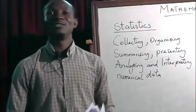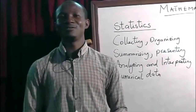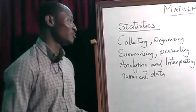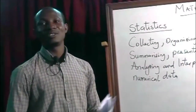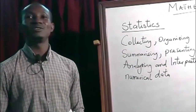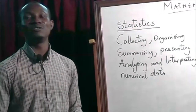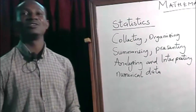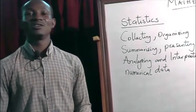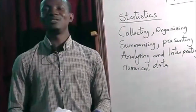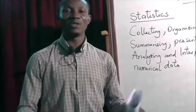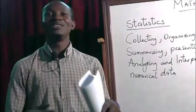In banks today, they need statisticians. A statistician is a person who is knowledgeable in the area of statistics — the person who deals with numbers, analyzing them and bringing out good decisions. Schools need statisticians. The government needs statistics. Every aspect of our life needs statistics. Even mommies and daddies that cook at home, they need statistics.